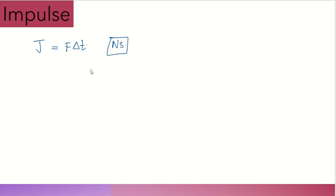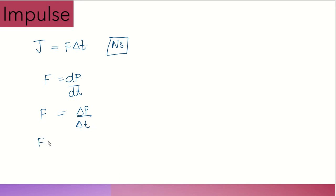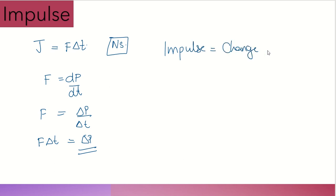The impulse-momentum principle states that impulse is equal to change in momentum. Starting from F equals delta P divided by delta t, multiplying both sides by delta t gives F × delta t equals delta P. Therefore impulse equals change in momentum. This is the impulse-momentum principle and it is very important.